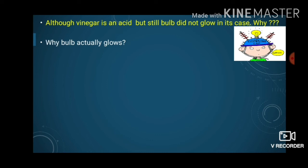If we take the case of lemon juice, what actually happened? Lemon juice allowed electric current to pass through it, and the electric current was flowing throughout the circuit. As the electric current reached the torch bulb, it heated the filament — which is made up of tungsten — to a high temperature, to such an extent that the filament started glowing. The strength of the current in lemon juice, detergent solution, and salt solution was so much that it was able to heat up the filament and light it up.